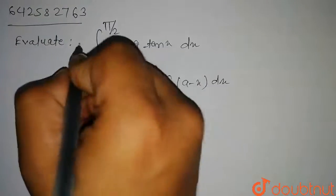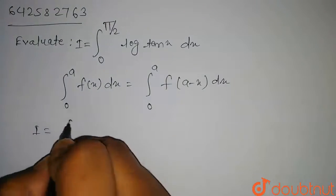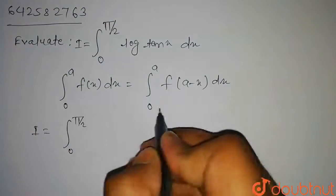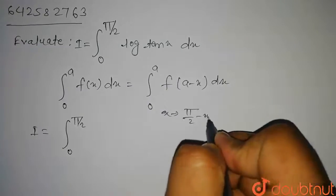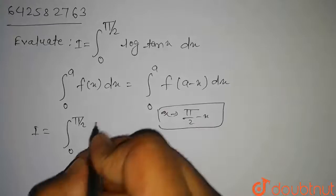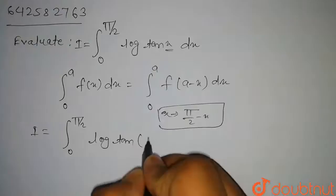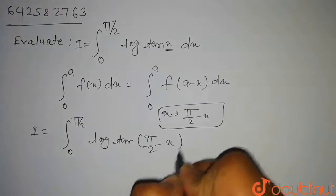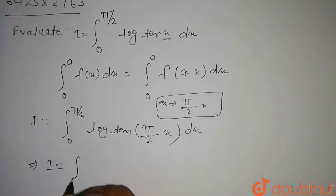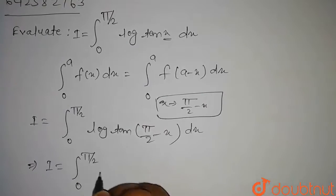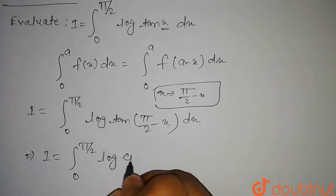So here, if we consider this as I, then we can write I is equal to integral 0 to π/2. Here we are going to change x by π/2 minus x. So we get log of tan(π/2 minus x), which is equal to log(cot x).